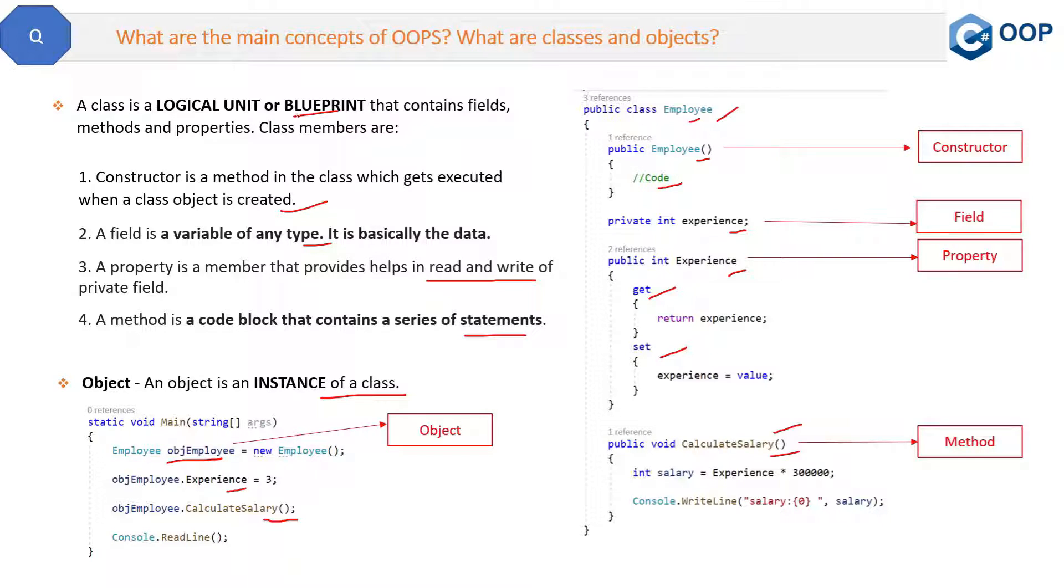Let's see the definition once again. So a class is a logical unit or blueprint that contains fields, methods, and properties. And an object is an instance of a class. So that is the answer of this question. Let's see the other questions in upcoming videos.